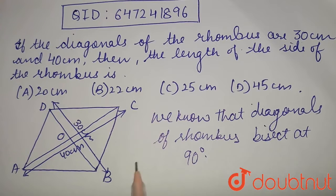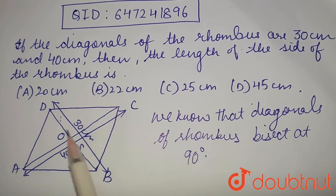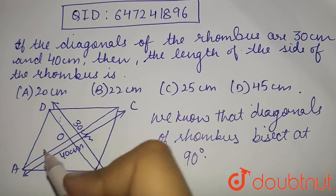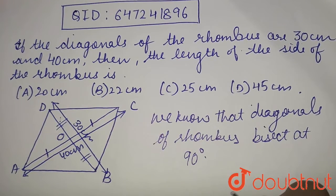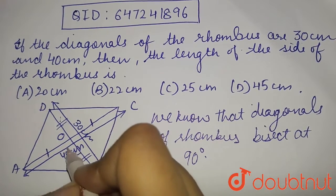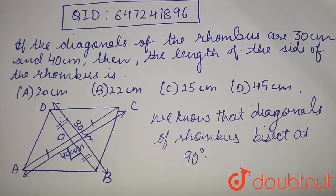So, we know this property that the diagonals bisect each other, that is AO equals OC and DO equals OB. And they bisect at 90 degrees, so this must be a right angle.